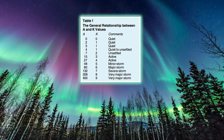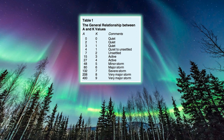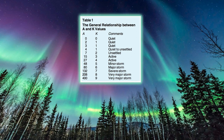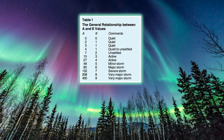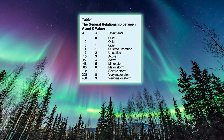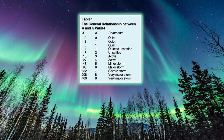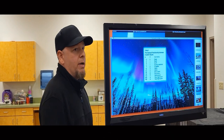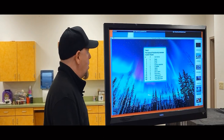Solar flux index conditions can be described as quiet, quiet to unsettled, active, or minor storms — we see this all the time on all of the reporting apps. We haven't seen one of these really quiet periods in a long time, but we've seen a lot of active and minor storms since the beginning of Solar Cycle 25. Hopefully we get more of the good stuff and less of the bad stuff as the solar cycle continues to ramp up.